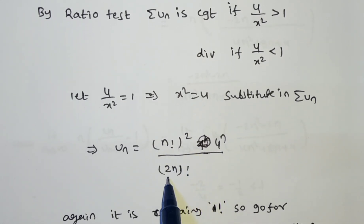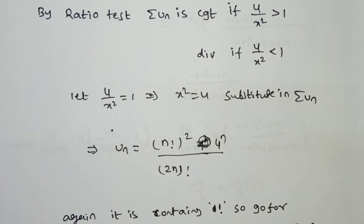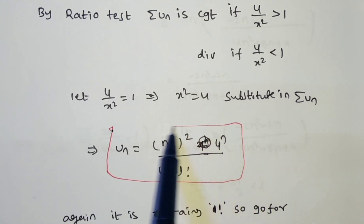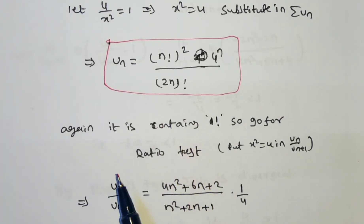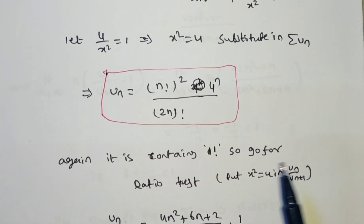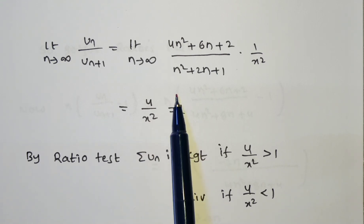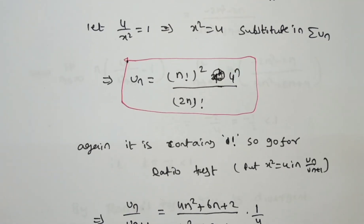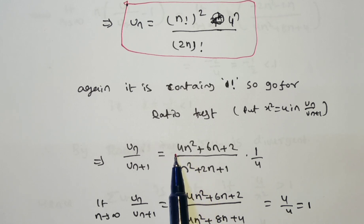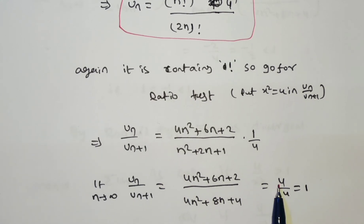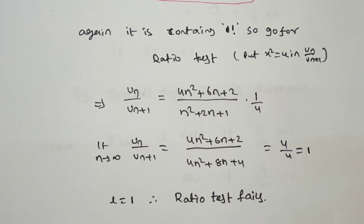Substituting x² = 4 into the series gives summation (n factorial)² / (2n factorial) times 4^n. The series still contains factorials, so we apply the ratio test again. Instead of recomputing u_n/u_{n+1} from scratch, substitute x² = 4 directly into the limit expression: 4/x² becomes 4/4 = 1. So the limit is 1, and the ratio test fails.